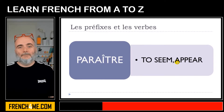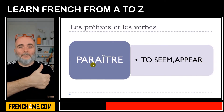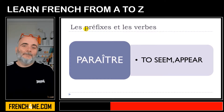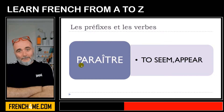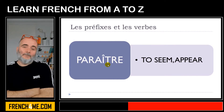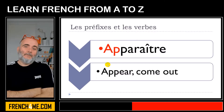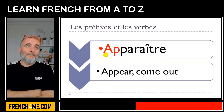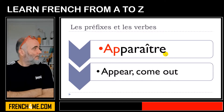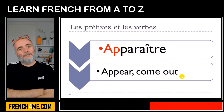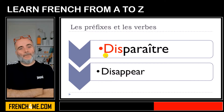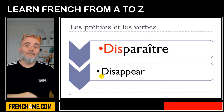When we're talking about les préfixes, we add a few letters in front of paraître, and by adding these letters we change the meaning of the verb. The first one will be apparaître — you've got the translation in English right here — and then disparaître.